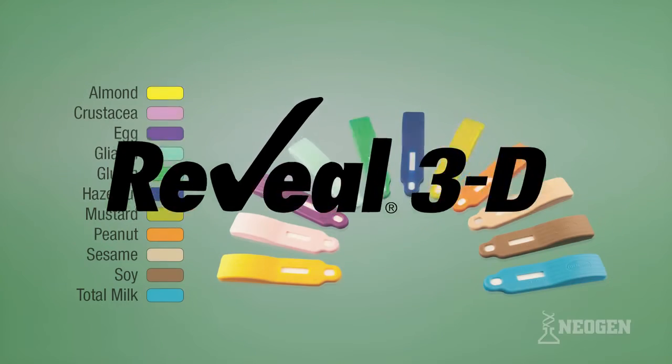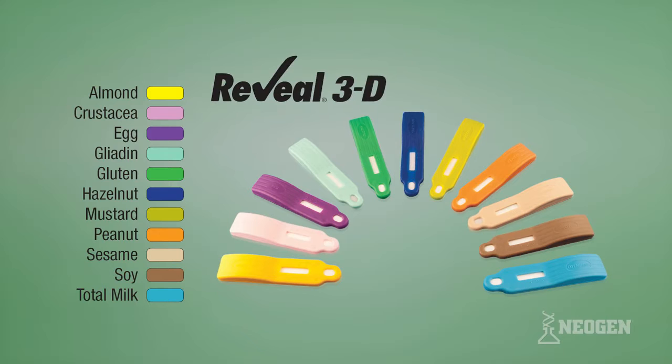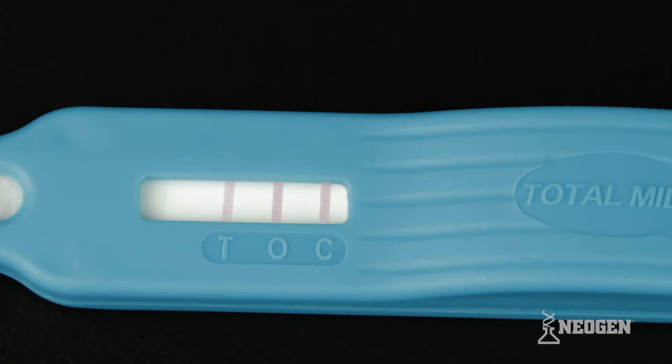The Reveal 3D test makes it simple to screen for the presence of low levels of allergens in CIP rinses and environmental swabs virtually anywhere. The test features a unique three-line design, including an overload line, that makes it easy for the user to identify both positive and high positive samples.